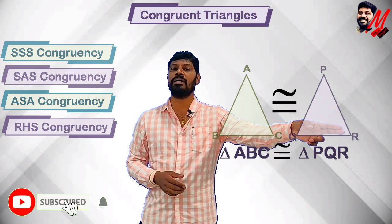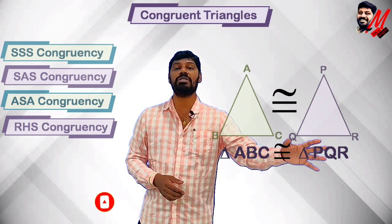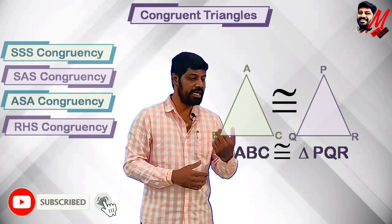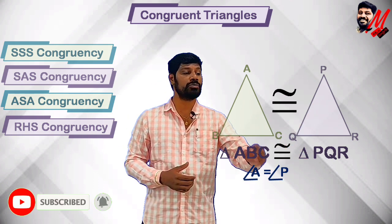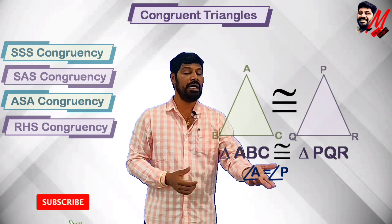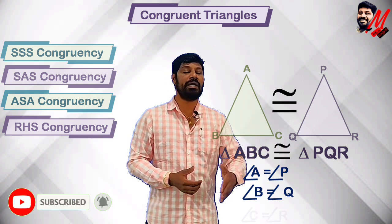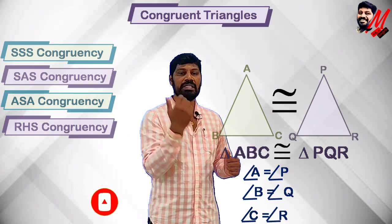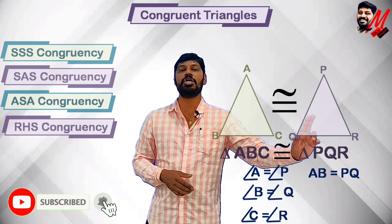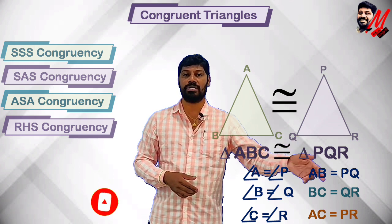When the two triangles are congruent, the corresponding angles are equal: angle A equals angle P, angle B equals angle Q, and angle C equals angle R. Coming to the sides: AB equals PQ, BC equals QR, and CA equals PR.